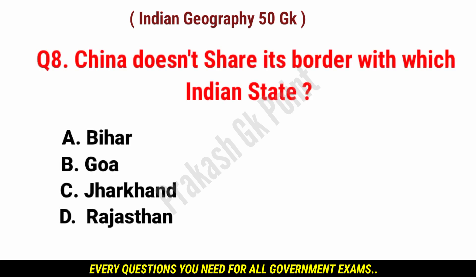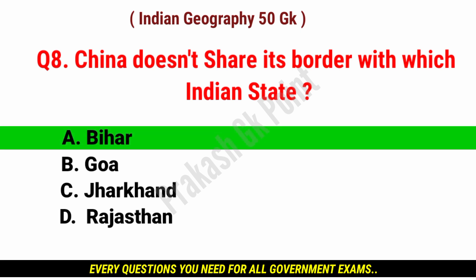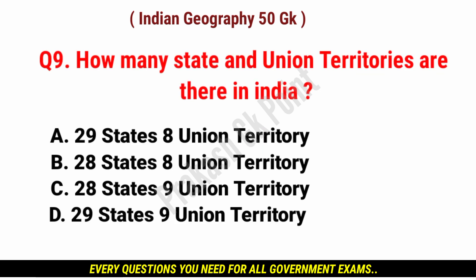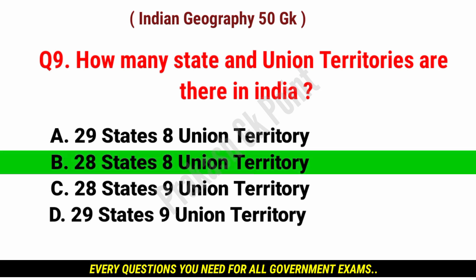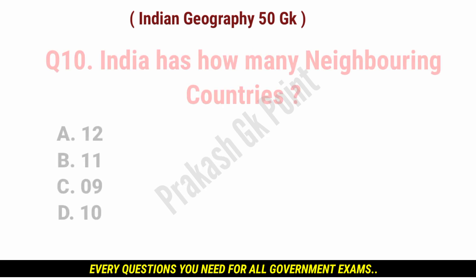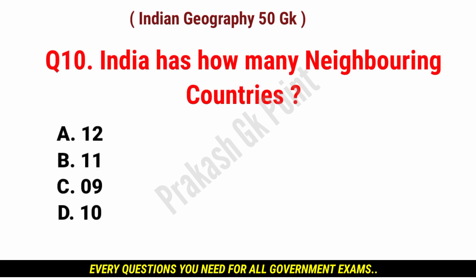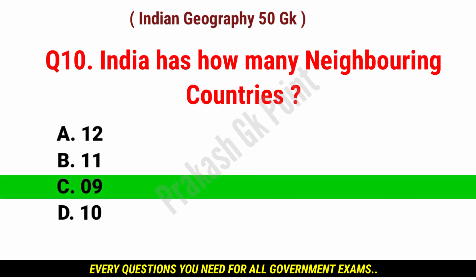China does not share its boundary with which Indian state? Answer: option A, Bihar. How many states and union territories are there in India at present? Answer: option B, 28 states and 8 union territories. India has how many neighboring countries? Answer: option C, 9 neighboring countries.